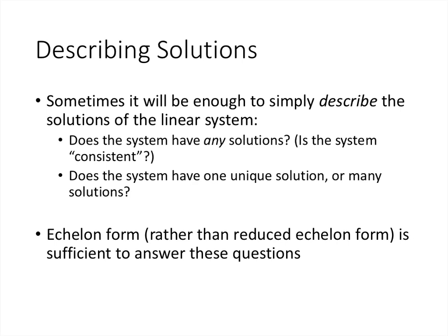Sometimes we don't want specific solutions but just want to understand the nature of the solutions — for example, whether the system has any solutions at all. We use the word consistent to mean there is at least one solution. We might also ask whether there is exactly one unique solution or infinitely many. The echelon form, rather than the reduced echelon form, is sufficient to answer these questions. So if all we want to know is the nature of the solutions, we only need to reach echelon form.